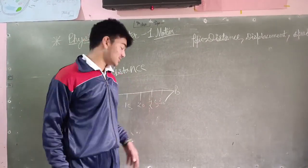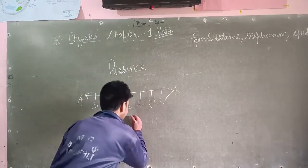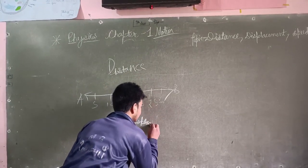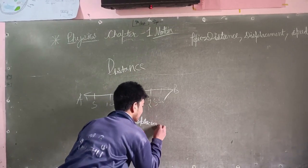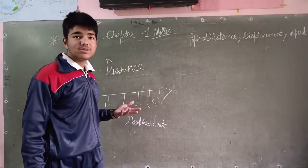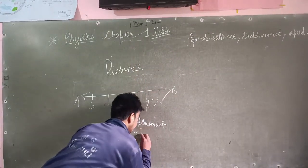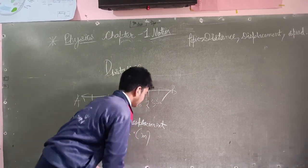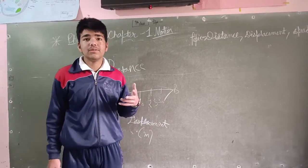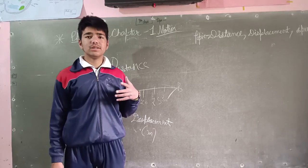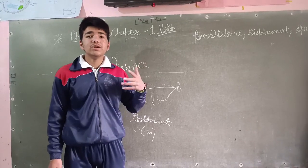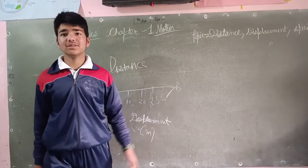The second concept is displacement. The unit of displacement is meter. Displacement is the shortest way traveled between two points.